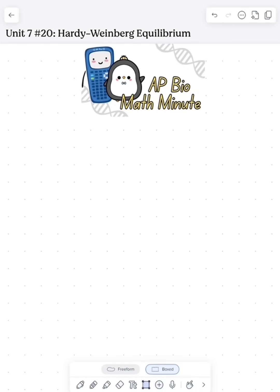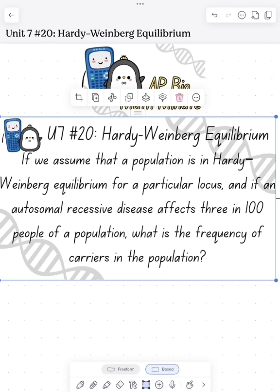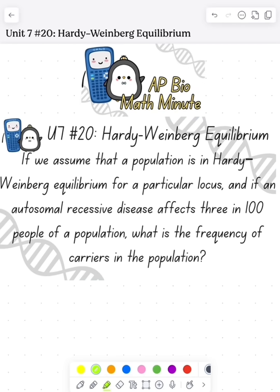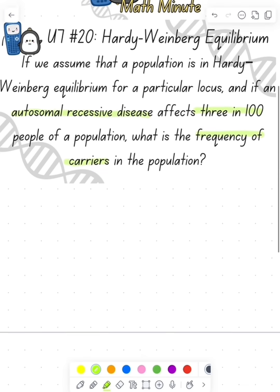What's up AP Bio ones? Today we're doing AP Bio Math Minute looking at Hardy-Weinberg. There's a population in Hardy-Weinberg equilibrium and we find that a certain autosomal recessive disease affects three in a hundred individuals. So we need to find the frequency of carriers.